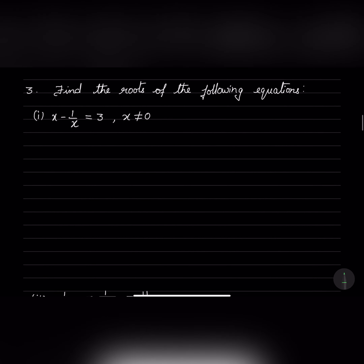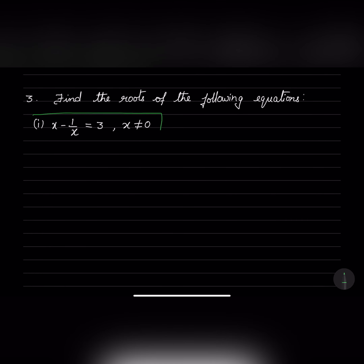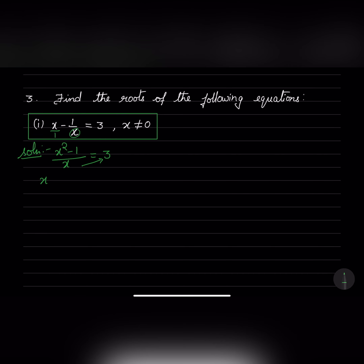Next, find the roots of the equation x minus 1/x equals 3, where x is not equal to 0. If x becomes 0, then 1/x would be 1/0, which is not valid. Taking LCM, the LCM is x, and we get x squared minus 1 equals 3. Cross multiplying, x squared minus 1 equals 3x. Shifting 3x to the left hand side, we get x squared minus 3x minus 1 equals 0.